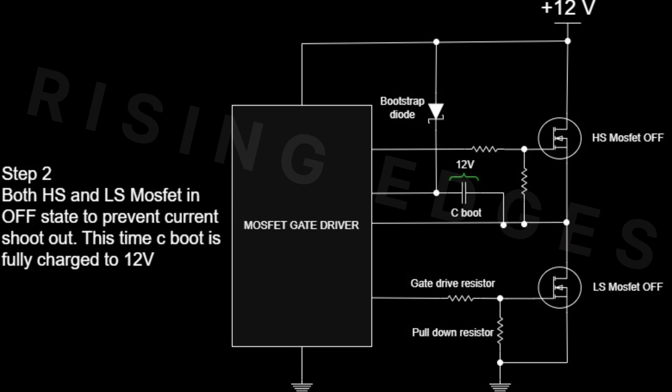Now both the high-side and the low-side MOSFETs are in the OFF state. This dead time is introduced to avoid a short circuit from 12V to ground. At this point, C-boot is fully charged to 12V and is ready to drive the high-side switch.